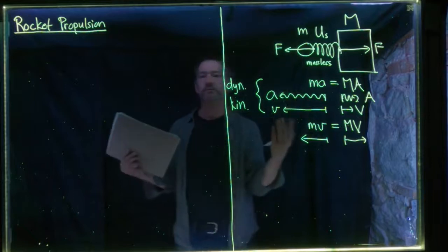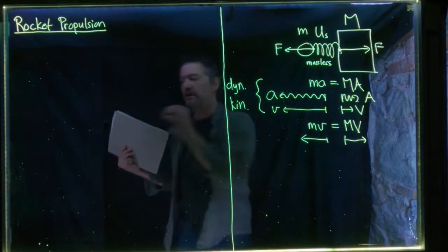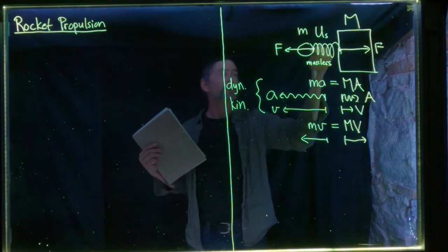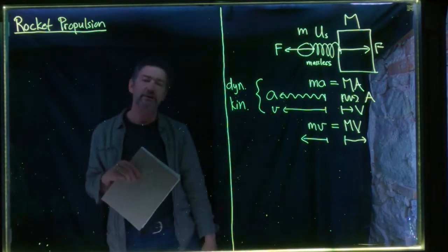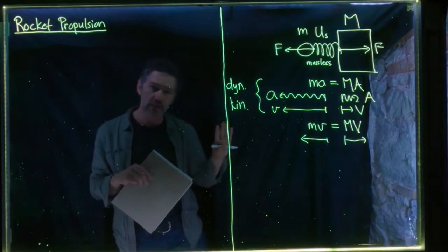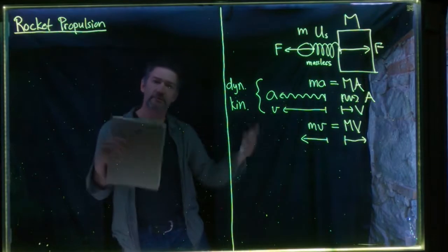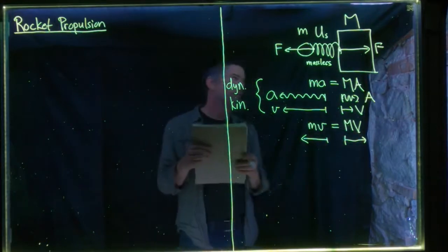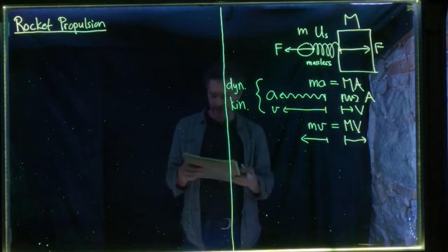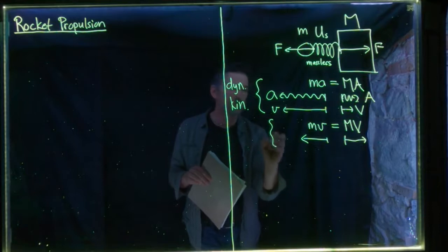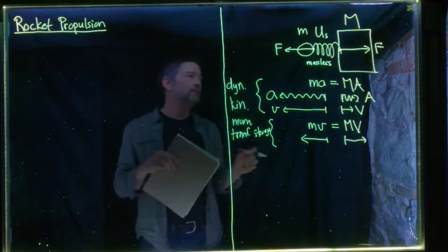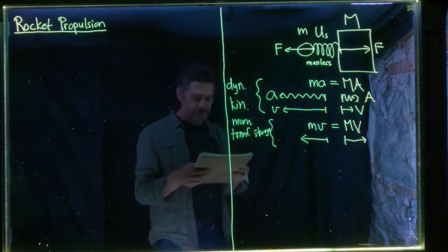How did this momentum get transferred? By applying a force over time. I applied the force of my hand over time on the cannonball, transferring momentum to the left. But my feet were simultaneously transferring exactly the same force to the boat and the rest of the cannonballs over the same time — same force, same time — so the same momentum was transferred in opposite directions. These two momenta are of equal magnitude and opposite directions.